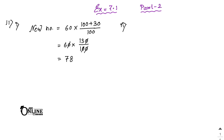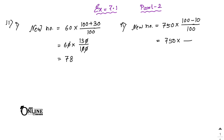So it will be 60 into 130 by 100. The zeros cancel out, so 6 into 13 equals 78. Part 2: decrease the number 750 by 10 percent. New number equals 750 into (100 minus 10) divided by 100, that equals 750 into 90 by 100. Zeros cancel out, 75 into 9 equals 675.